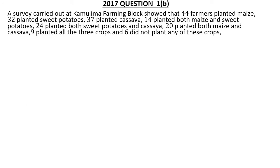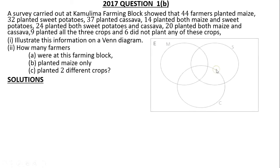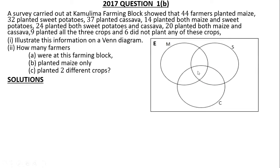2017: A survey carried out at Kamulima farming block showed that 44 farmers planted maize, 32 planted sweet potatoes, 37 planted cassava, 14 planted both maize and sweet potatoes, 24 planted both sweet potatoes and cassava, 20 planted both maize and cassava, 9 planted all three crops, and 6 did not plant any of these crops. The 2016 and 2017 questions are almost similar. Illustrate this information on a Venn diagram. How many farmers were at this farming block? How many farmers planted maize only? How many farmers planted two different crops?